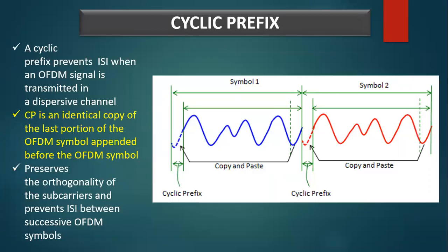Another important aspect of OFDM systems is the cyclic prefix. A cyclic prefix is a guard interval that prevents inter-symbol interference when an OFDM signal is transmitted in a dispersive channel. A cyclic prefix is basically an identical copy of the last portion of the OFDM symbol appended before the OFDM symbol, as shown in the figure. This preserves the orthogonality of the subcarriers and prevents inter-symbol interference between successive OFDM symbols.